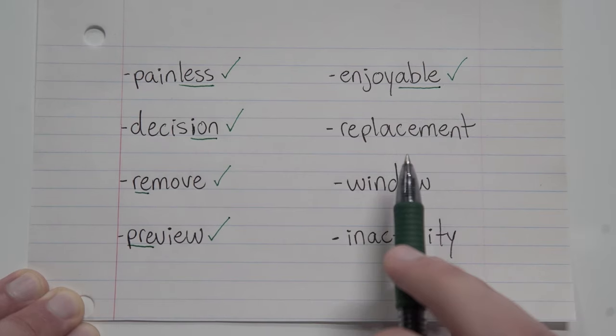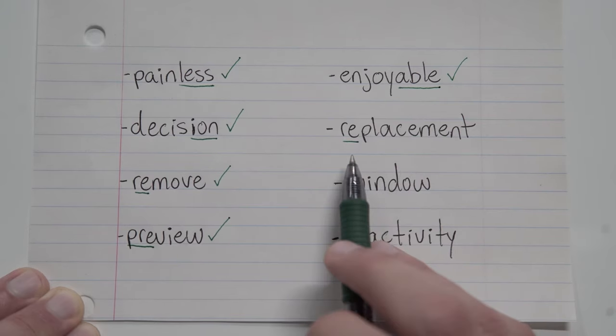How about replacement? Well, the base word is place, meaning we have both a prefix re and a suffix ment.